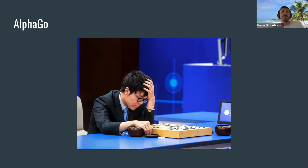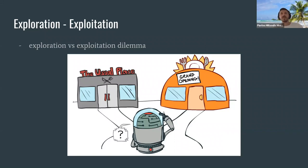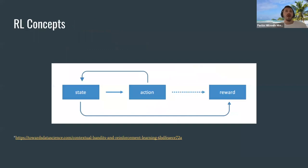In RL, the algorithm learns by trial and error. There is an exploration and exploitation dilemma — if I'm playing chess, should I continue doing the same moves, or should I try something new and potentially win the game? There is a rewarding mechanism there.